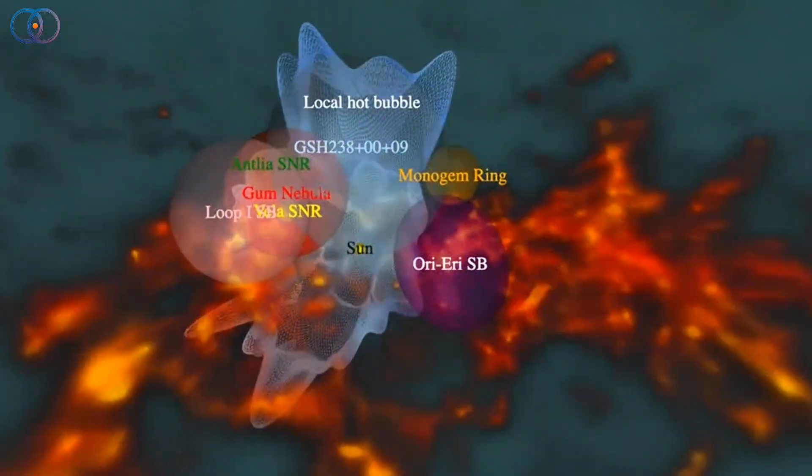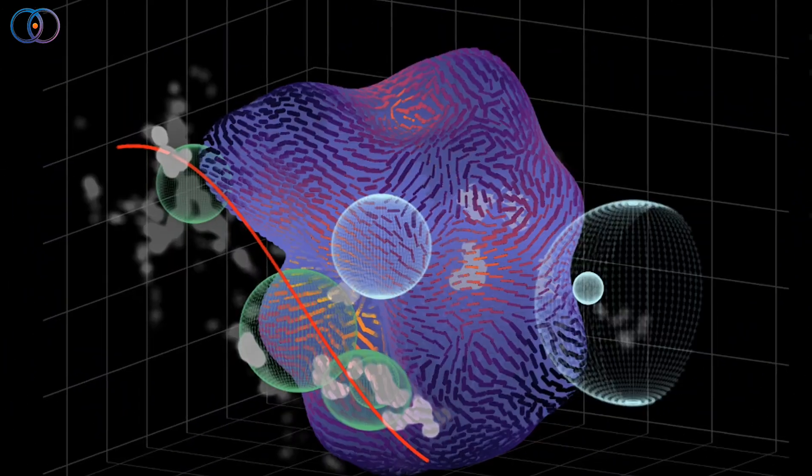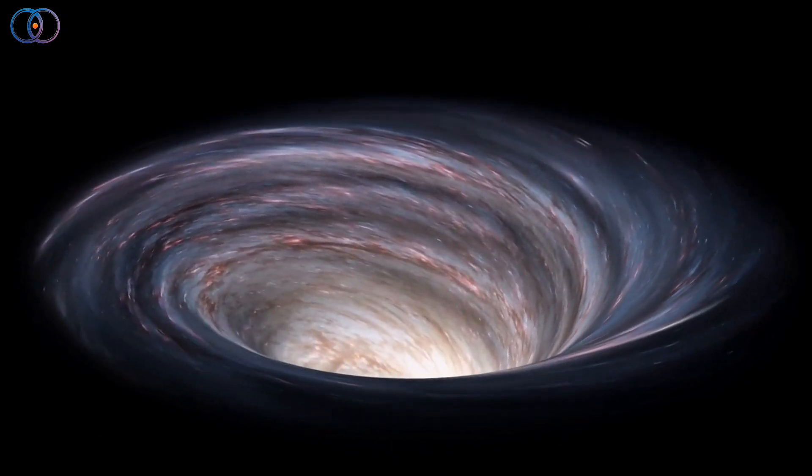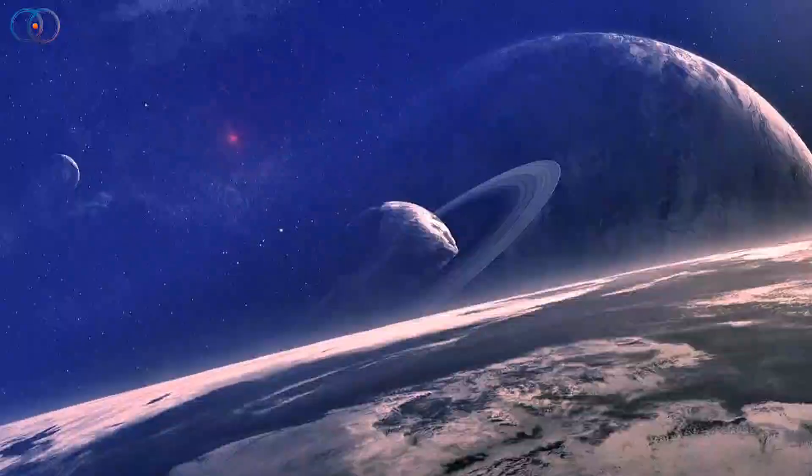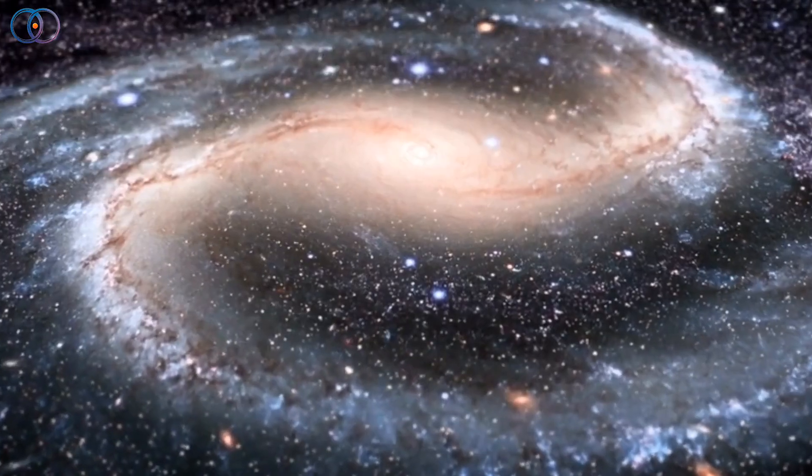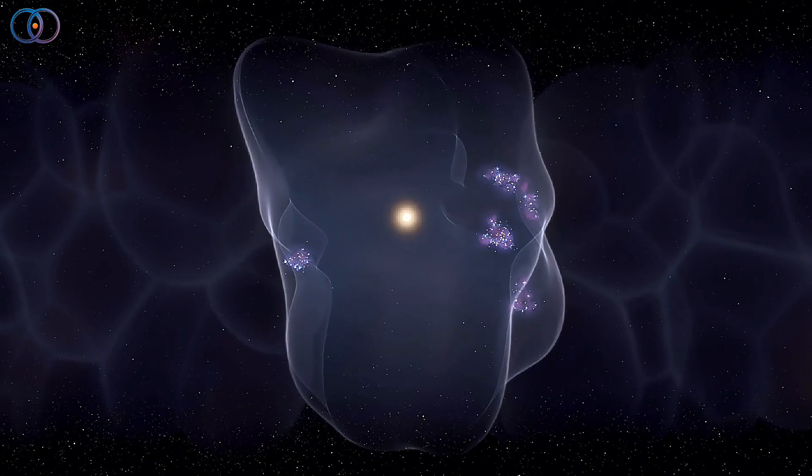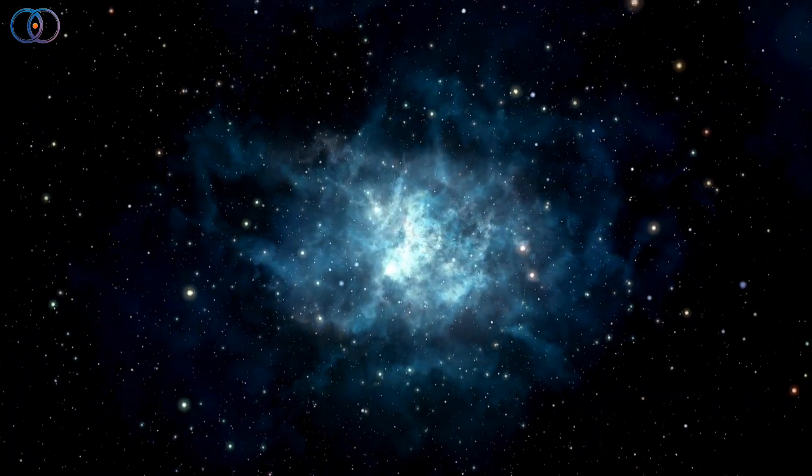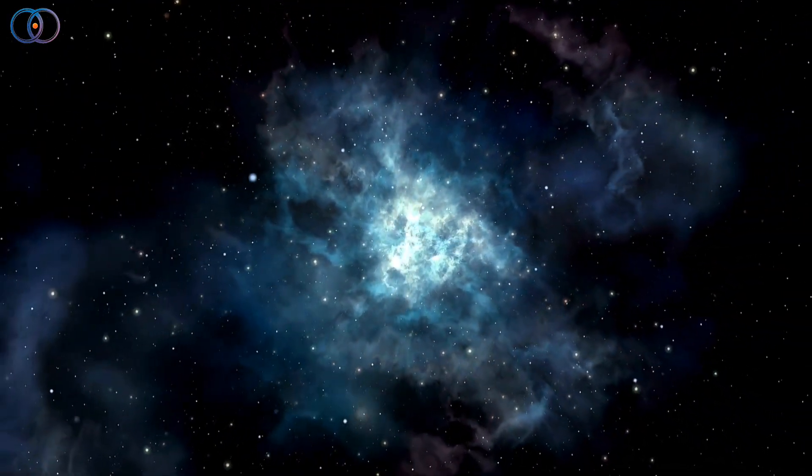What makes this discovery so exciting is how it could change our understanding of the galaxy. If these tunnels are real, they could act like express lanes for energy and particles, shaping the weather of the cosmos. The explosions of dying stars don't just release light and radiation. They may also help sculpt the galaxy, controlling where new stars and planets can form. The edges of bubbles are often where gas and dust get pushed together, triggering the birth of new stars. That means these tunnels could play a role in star formation far beyond their own boundaries.